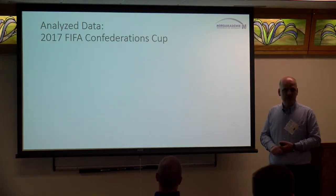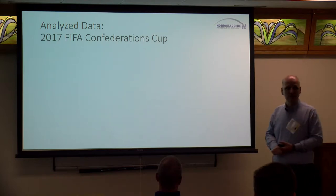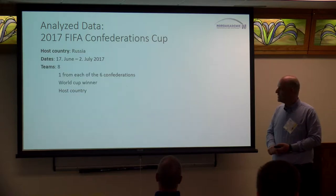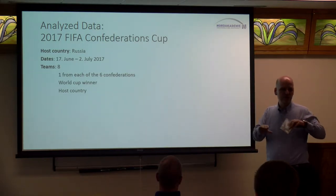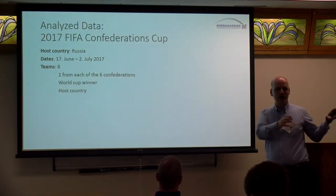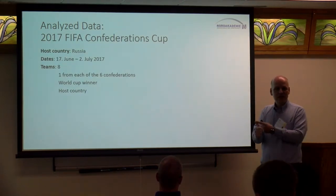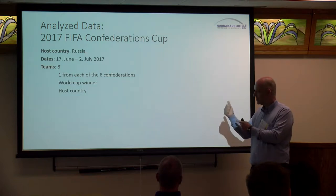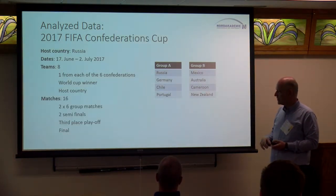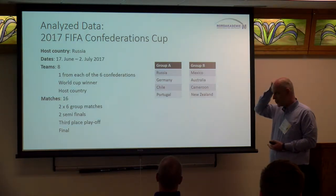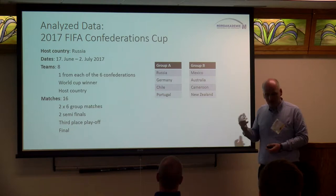The data we used to validate this approach is from the Confederations Cup, which took place about one year ago in Russia in June. There were eight teams — the best from each of FIFA's six regions (South America, Middle America, North America, Europe, Africa, Asia, and Oceania) — plus the FIFA World Cup champion and the host country, Russia. We had eight countries competing, with 12 matches in the group stage, two semifinals, the third-place playoff, and the final.